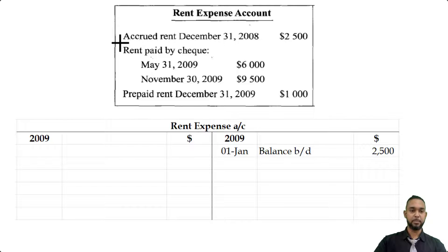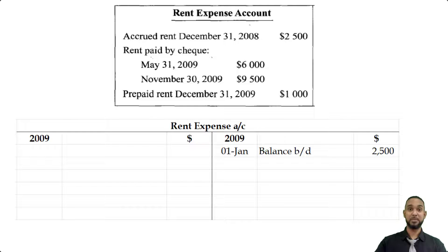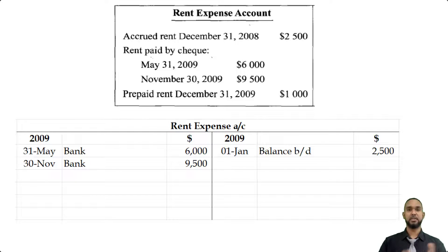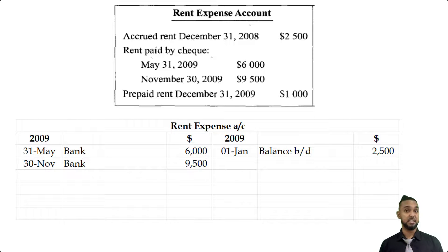Now we have a couple of payments. Rent paid by check May 31st, 2009: $6,000. November 30th, 2009: $9,500. When they give you dates, please be sure to use the dates. When you pay an expense, you have to debit the expense account. Why? Because the other half of the transaction is a payment coming out of bank. Bank is an asset, and when you make a payment out of bank the bank account is decreasing — a decrease in an asset means you credit the asset account, and every credit needs a corresponding debit. So we have two debits here because we have two payments.